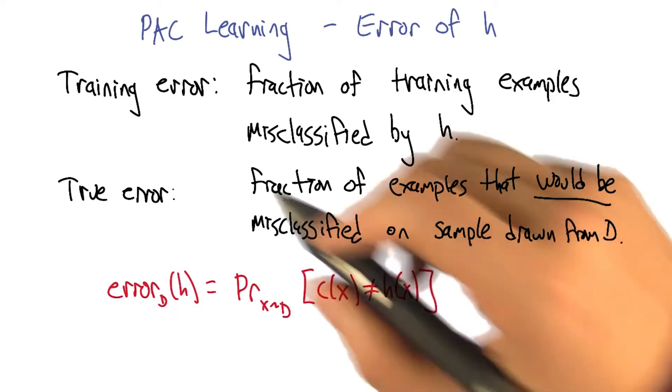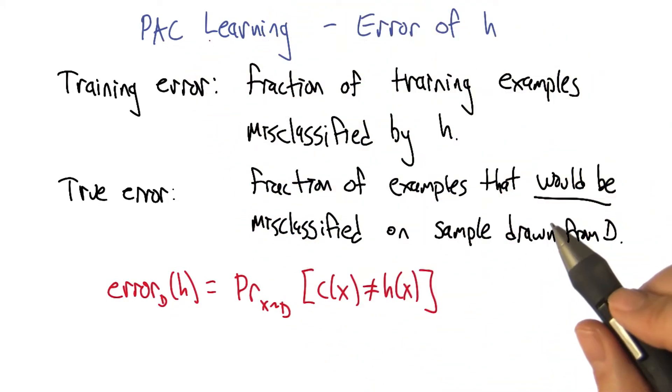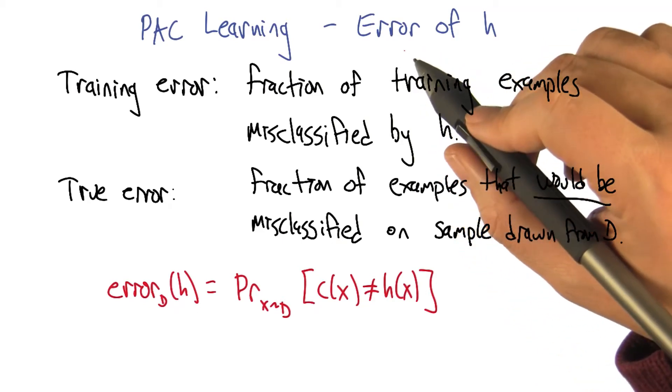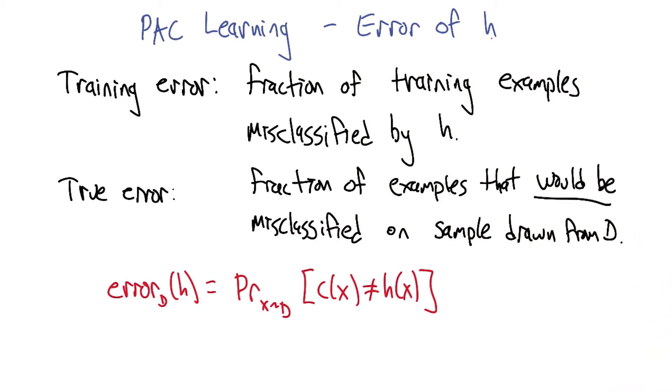The next topic we're going to get into is to nail down a concept called PAC learning. So to do that, we're going to delve into what the error of a hypothesis is. And there's two kinds of errors: the training error and the true error.